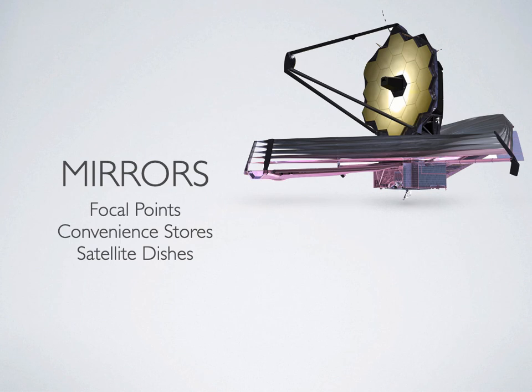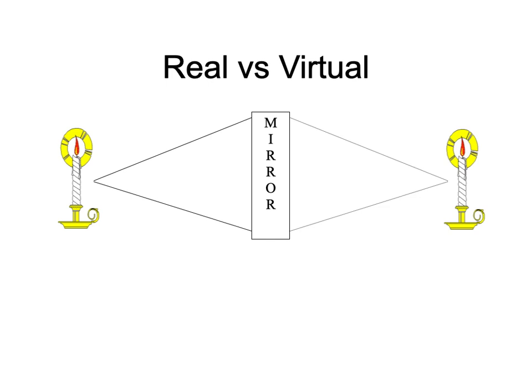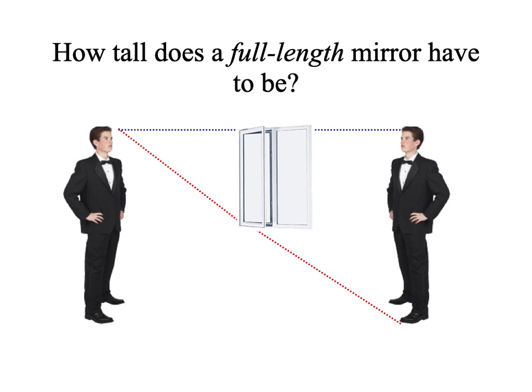Moving on to mirrors. In lens systems, the object is left, lens is middle, image is right. With mirrors, the conventions flip once light hits the mirror: if the image is to the left of the mirror, it is real; if to the right, it is virtual. A classic mirror problem: how tall does a full-length mirror have to be for someone to see his entire body?